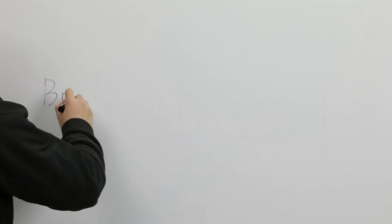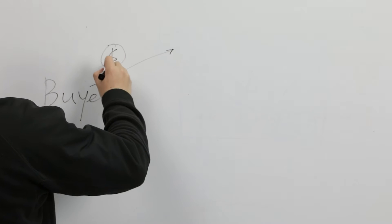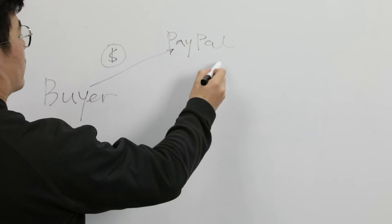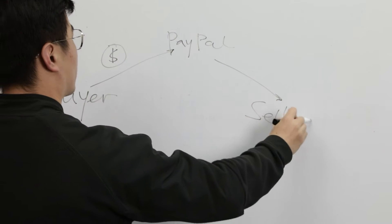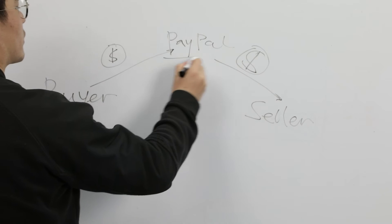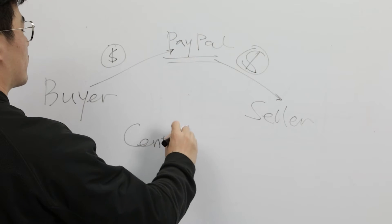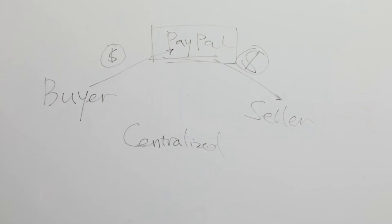For example, when you purchase a good online, you first pay to PayPal, then PayPal transfers the money to the seller after you confirm the receiving. PayPal is a centralized organization in this transaction, but centralized organizations are not safe since there's a possibility that hackers break through the system.